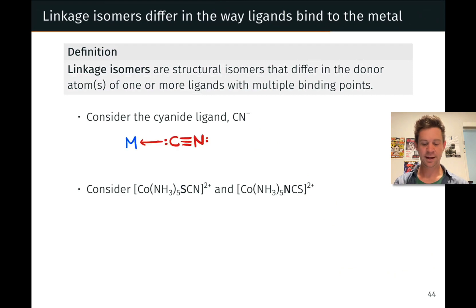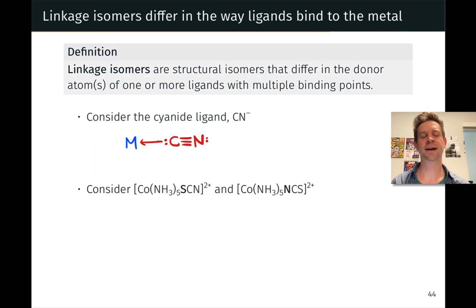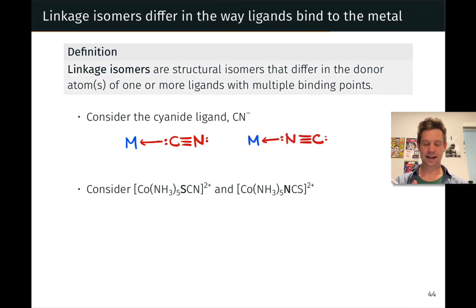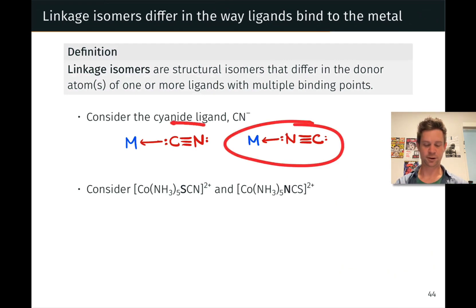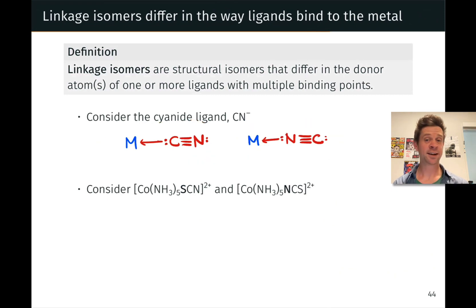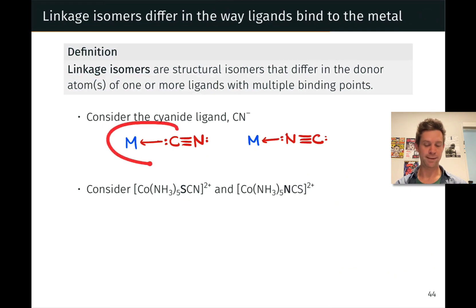Consider the cyanide ligand, which contains a carbon and a nitrogen, each of which has a lone pair. The typical binding mode for cyanide is through the carbon — carbon is less electronegative and more Lewis basic than nitrogen, so carbon tends to give its lone pair away in a dative bond more readily. However, we could imagine turning the ligand around so that nitrogen points toward the metal center. Now the nitrogen is acting as the Lewis base, and this is not the same structure. They have different connectivity — the nitrogen-metal bond is not the same as the carbon-metal bond — making these structural isomers, specifically linkage isomers, since there's a difference in the metal–nonmetal linkage within the complex.